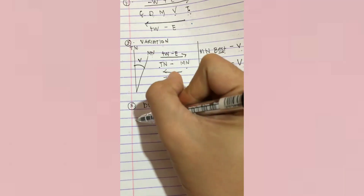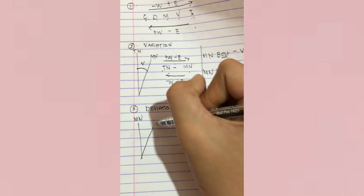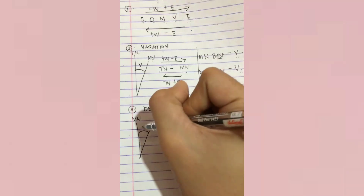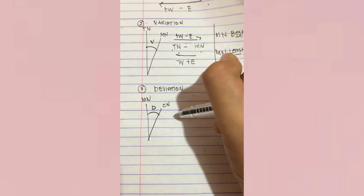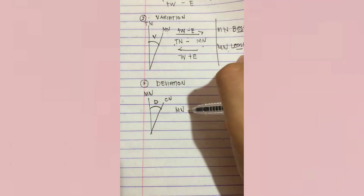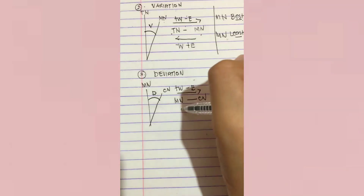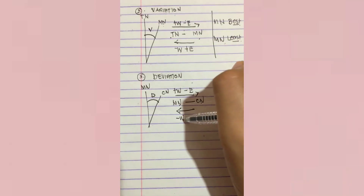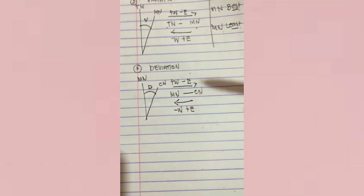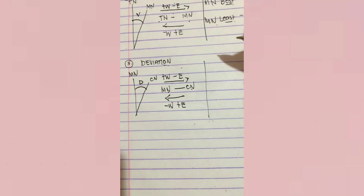Deviation is the angle between magnetic north and compass north — this angle is what we call the deviation. Same as variation: if you want to calculate from magnetic north to compass north, we should add westerly and subtract easterly. If you want to calculate from compass north to magnetic north, we should subtract westerly and add easterly.